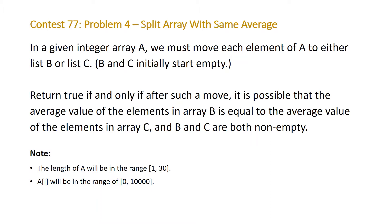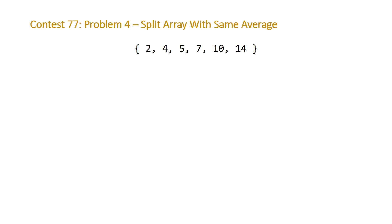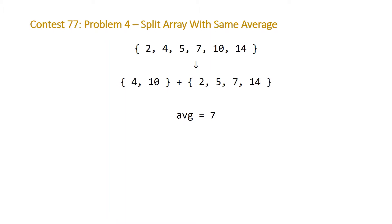Let's take a look at an example. We have an array of six elements with values 2, 4, 5, 7, 10, and 14. The question is asking us: is there a possible partitioning of this array into two partitions such that the average of each partition is equal to the other? If we split our array into a partition containing 4 and 10, and another partition containing 2, 5, 7, and 14, the average of both partitions is 7, so we return true.